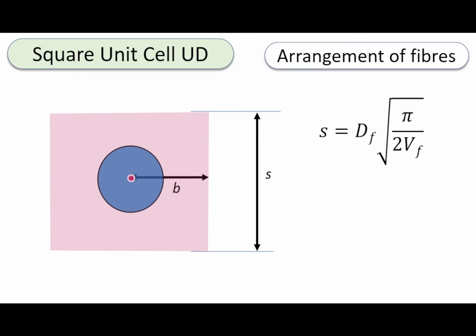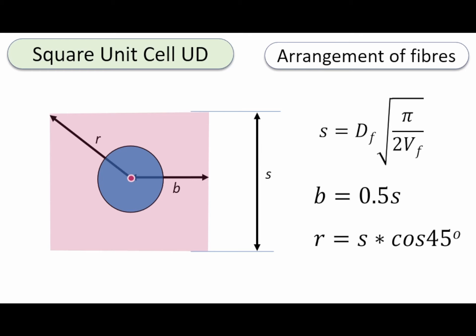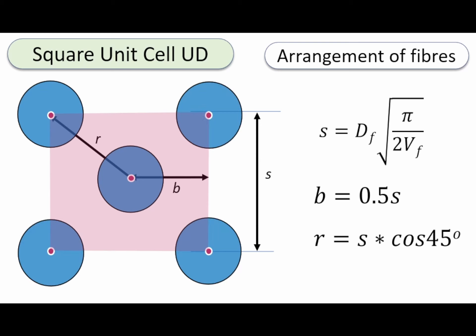The other thing we want to look at is the distance from the central fiber to the outermost edge, which is just half of the edge length s. The radial distance from the center to a corner can also be calculated — it is s times the cosine of 45 degrees. Once we locate all that, we can use that information to populate the system and create the square arrangement.